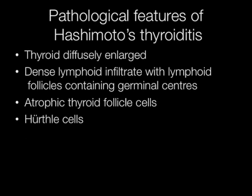The pathological features of Hashimoto's thyroiditis include a diffusely enlarged thyroid, dense lymphoid infiltrate with lymphoid follicles containing germinal centres, atrophic thyroid follicle cells, and Hürthle cells — these are cells with abundant pink-staining cytoplasm.